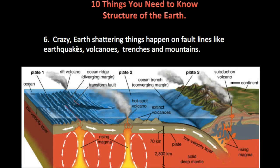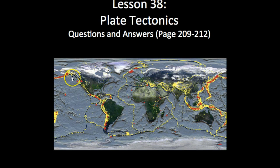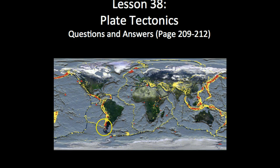There are earth-shattering things that happen on fault lines or plate boundaries. This is where you're going to find a lot of earthquakes, volcanoes, trenches, and mountains. This brings us back to the beginning photo — all those yellows are where earthquakes are, and all of that red is volcanoes.